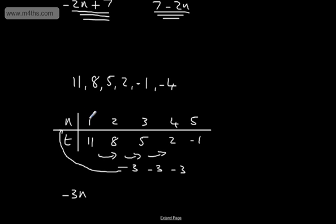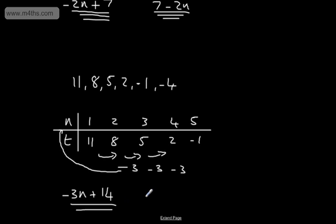If I do minus 3 times 1, that gives me minus 3. What do I need to do to get to 11? The answer is add 14. Minus 3 times 2 is minus 6, plus 14 is 8. Minus 3 times 3 is minus 9, plus 14 gets me up to 5. This is the nth term — minus 3n plus 14, or if you like, 14 minus 3n. It's entirely up to how you write that.